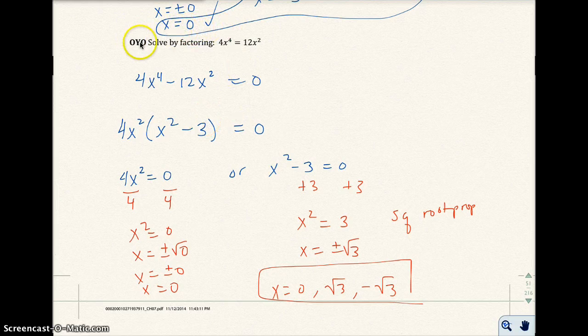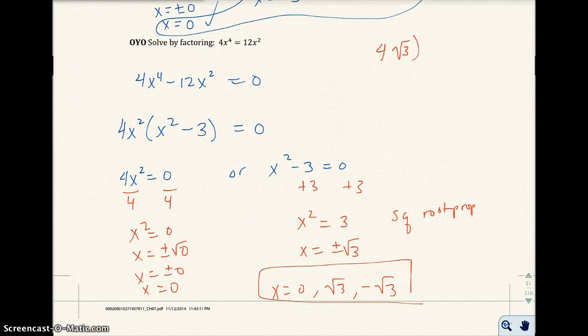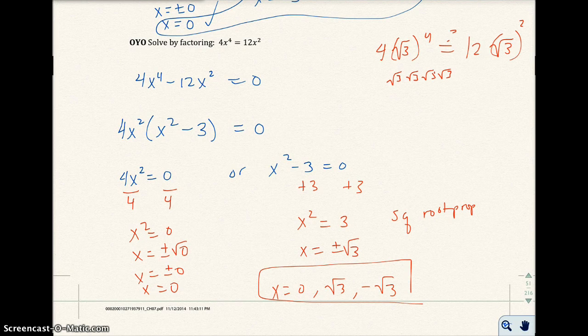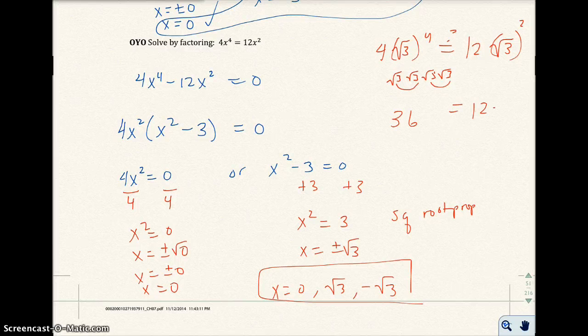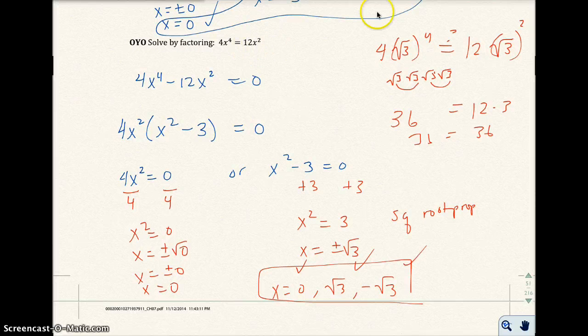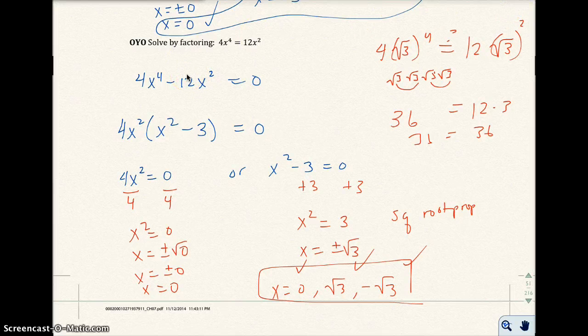Let's check this one. Let's check the square root of 3. Square root of 3 to the 4th power is going to be 9. You have square root of 3 times square root of 3 times square root of 3 times square root of 3. So this would be 3 times 3, which is 9. So I get 36. And here I would have 12 times 3, which is 36. So that one checks. We know if we put 0 in here, both sides get 0. And this one checks also because the negative sign doesn't really matter with the 4th power and 2nd degree power.